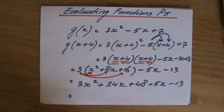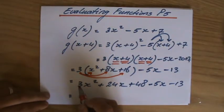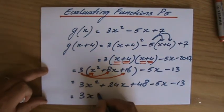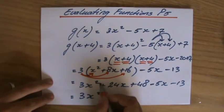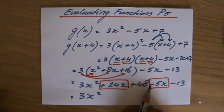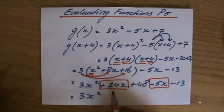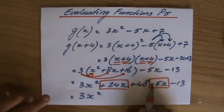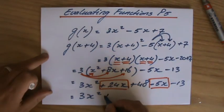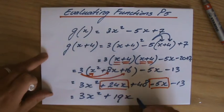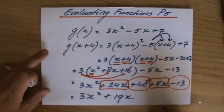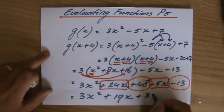I still have to simplify — I have to combine the like terms. Well, I only have one term with an x squared, so I can already start by saying 3x squared. Then I have 24x minus 5x. The sign belongs to that term, so it's not 24x plus 5x — it is negative 5x. So 24x minus 5x, those are 19x's. And I have 48 minus 13, which is a positive 35.